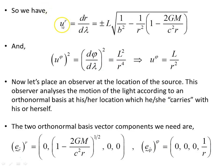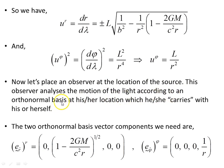The velocity component in the radial direction is this object here, u^r. The angular component u^φ is L/r². Now we imagine the observer at the location of the source. This observer analyzes the motion of the light according to an orthonormal basis at their location, which they carry with themselves wherever they go. An observer in spacetime has their own orthonormal basis very local to a small region of spacetime around them.